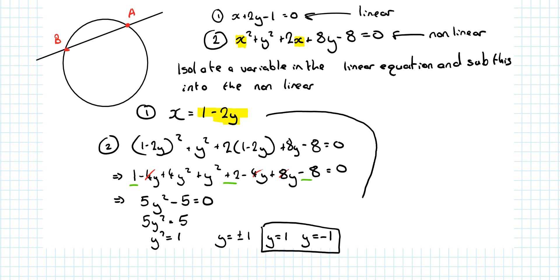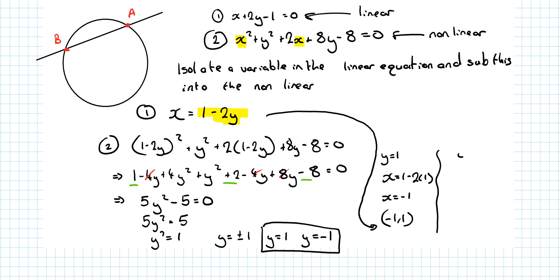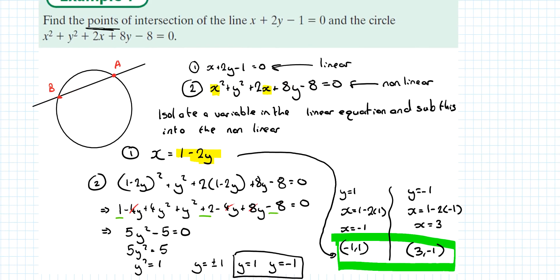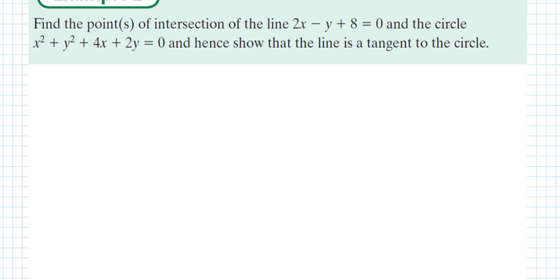Because we've already isolated x, it's easy to find. When y = 1: x = 1 − 2(1) = −1, giving the point (−1, 1). When y = −1: x = 1 − 2(−1) = 3, giving the point (3, −1). Those are the two points of intersection between the circle and the line. To summarise: isolate a variable in the linear, then substitute into the nonlinear.